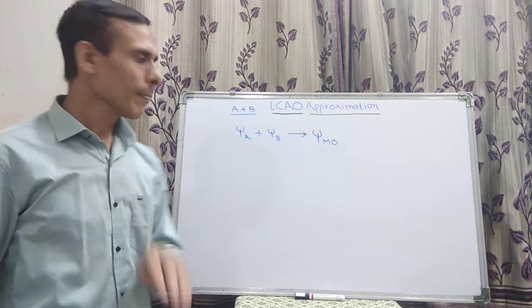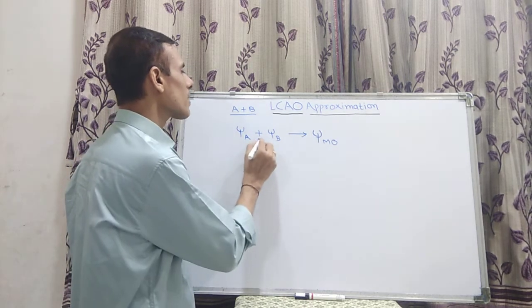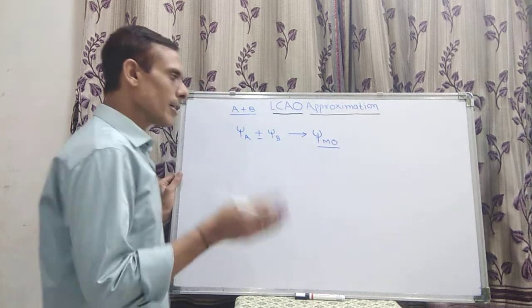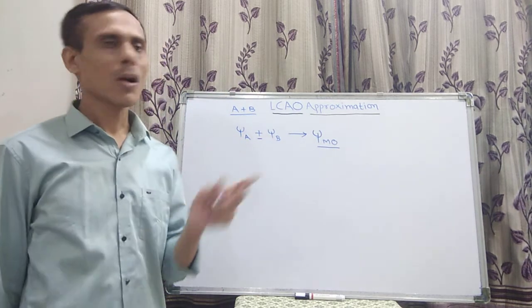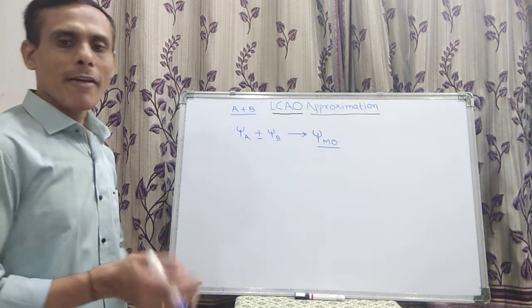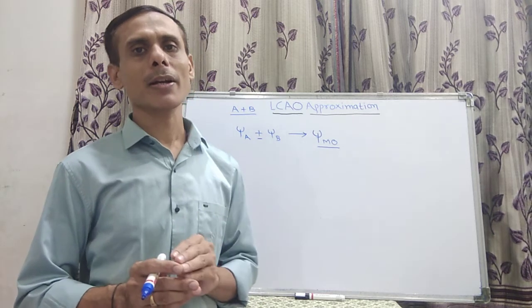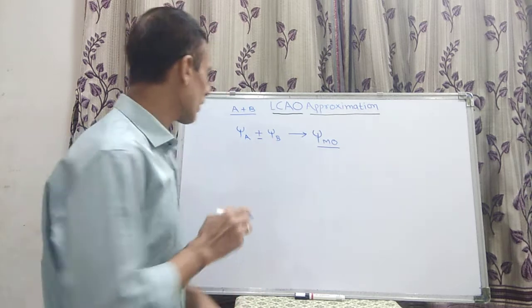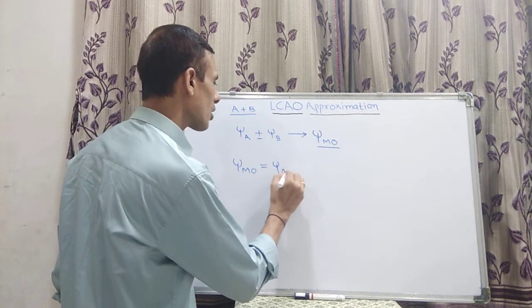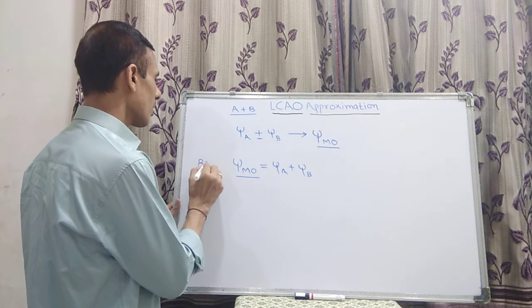This molecular orbital forms either by the addition or by the subtraction of these two atomic orbitals. The molecular orbital psi MO is formed either by addition of psi A plus psi B, or by the subtraction of psi A minus psi B. When the addition of wave functions takes place, there is formation of a molecular orbital which we call the bonding molecular orbital.